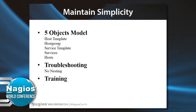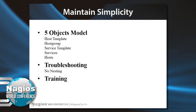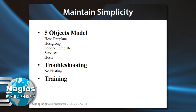Maintaining simplicity is really important if you're starting out. If you have experience and your staff has experience, you can make it more complex. But with five objects — host template, host group, service template, services, and hosts — you can build an efficient structure that gives you efficiency in design, implementation, and troubleshooting, without using nesting. Don't forget to add training into this. There's nothing worse than one administrator setting everything up, nobody really understanding what that person did, and then they leave. Everybody has experienced that. You have to train everybody so everybody understands how to deal with the problems.